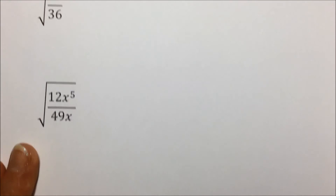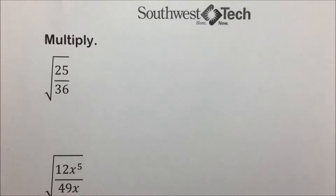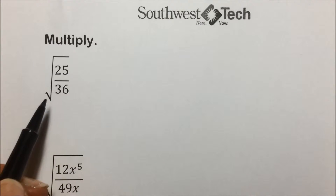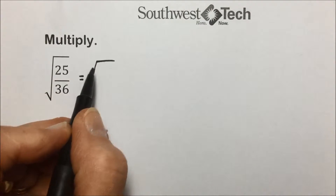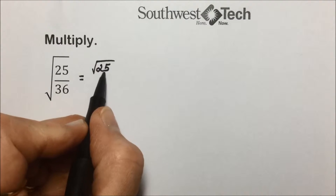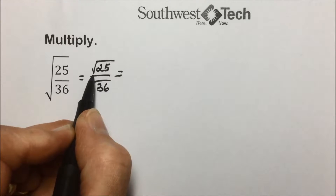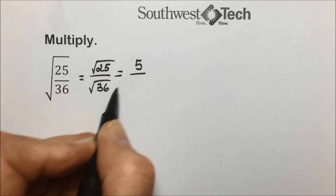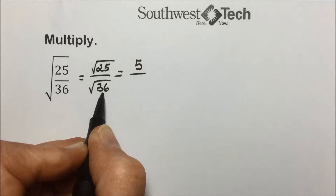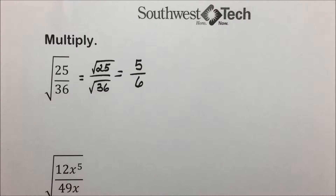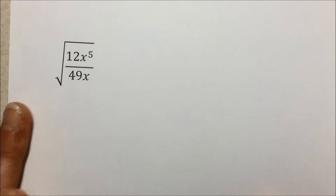In this first problem, we have the square root of the quantity 25/36. Since 25 and 36 do not have anything in common, we will separate it using the quotient rule for radicals and take the square root of 25 over the square root of 36. The square root of 25 is 5, and the square root of 36 is 6, leaving us with a final answer of 5/6. When doing division of radicals, we should always simplify our answer as much as possible.